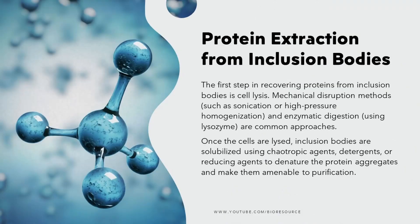How do we extract inclusion bodies? The first step in recovering proteins from inclusion bodies is cell lysis. Mechanical disruption methods such as sonication or high-pressure homogenization, and enzymatic digestion such as using lysozymes, are common approaches. Once the cells are lysed, inclusion bodies are solubilized using chaotropic agents, detergents, or reducing agents to denature the protein aggregates and make them amenable to purification.